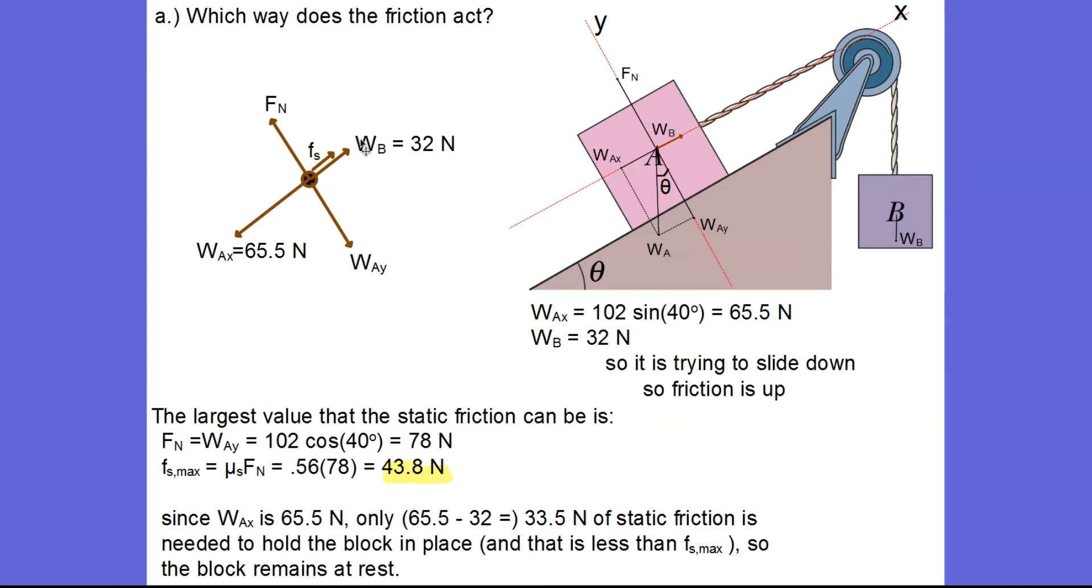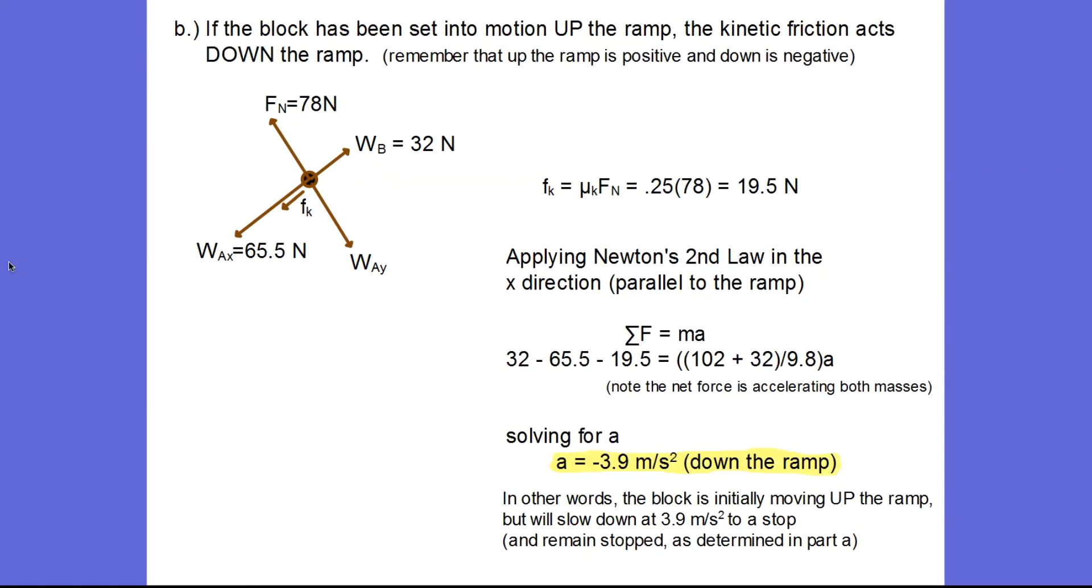In part b, it says that the block has been set into motion up the ramp. We don't care how that happened, all we care is that now the block is moving up the ramp. So I know right away that there is kinetic frictional force because it's sliding, and it will oppose the motion. If it's moving up the ramp, the kinetic friction of course is down the ramp. Here's my modified force diagram. My kinetic friction is μ_k times the normal force, so μ_k is 0.25, so my kinetic frictional force is 19.5 newtons.